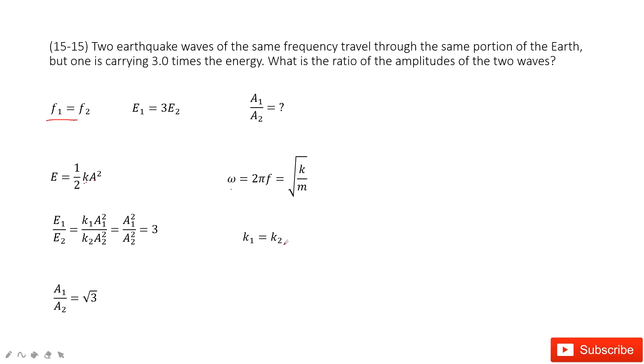So k1 equal to k2, so this can be cancelled. And then we get A1 over A2 squared is 3, so of course the ratio of amplitude is square root 3. Thank you.